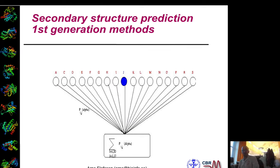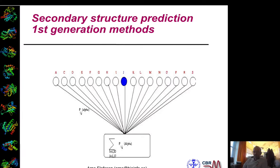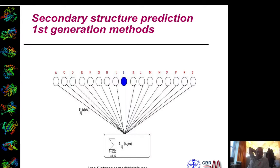Basically, what you do is predict the secondary structure of a central residue within a window — maybe something between 11 and 25 residues large. You calculate the probability that the central residue is in a particular secondary structure element, given that you have another amino acid at a given position of a specific type. For example, the probability that the central residue is in a helix if the first position is an alanine. Then you sum up all these probabilities over the entire window.